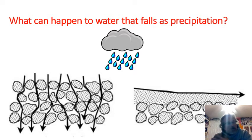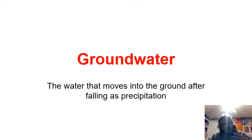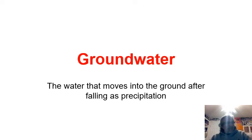Water doesn't magically disappear, so when it hits the ground it's going to go into the ground or it's going to move across the top of the ground. We're specifically starting our discussion with that water that's in the ground — water that fell from precipitation and then moved into the ground. We'll do the runoff stuff after we finish talking about groundwater. This is important because there is eight times more groundwater than there is water on the surface.